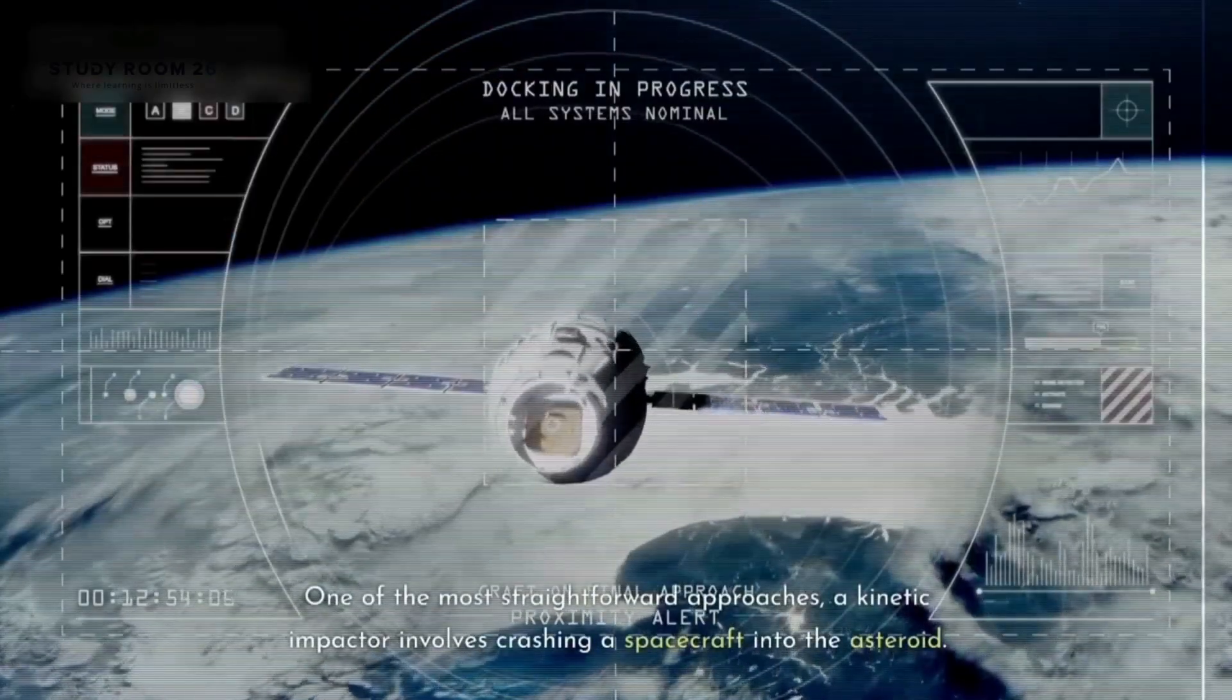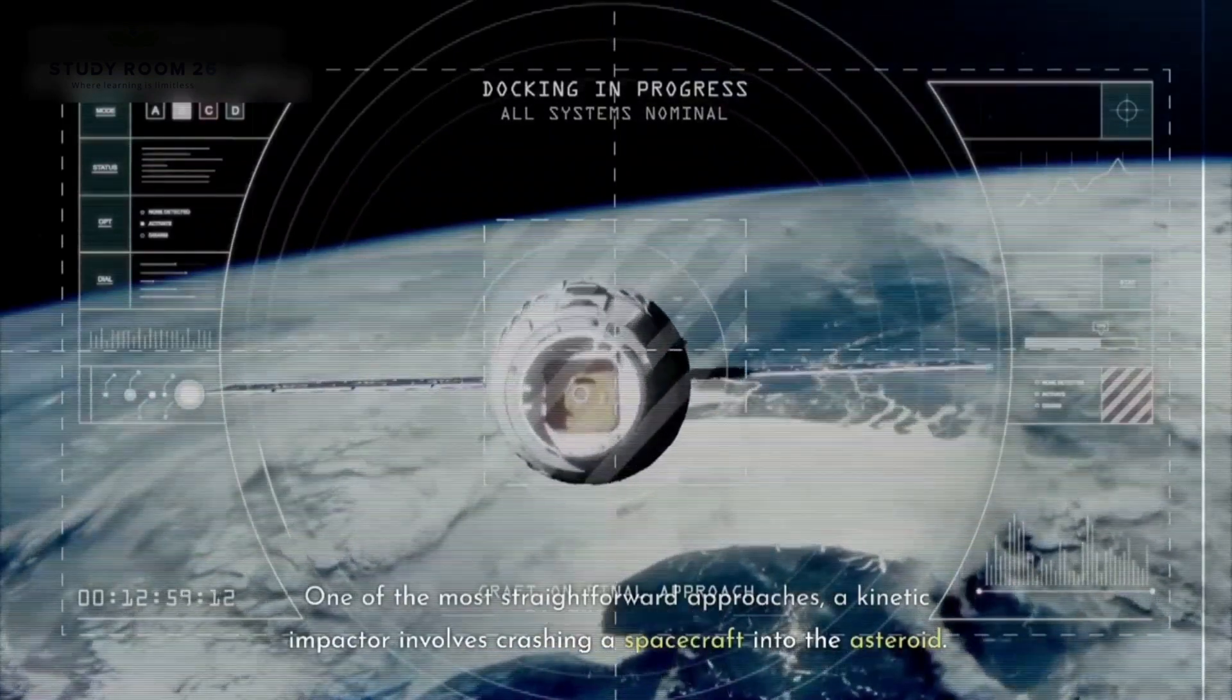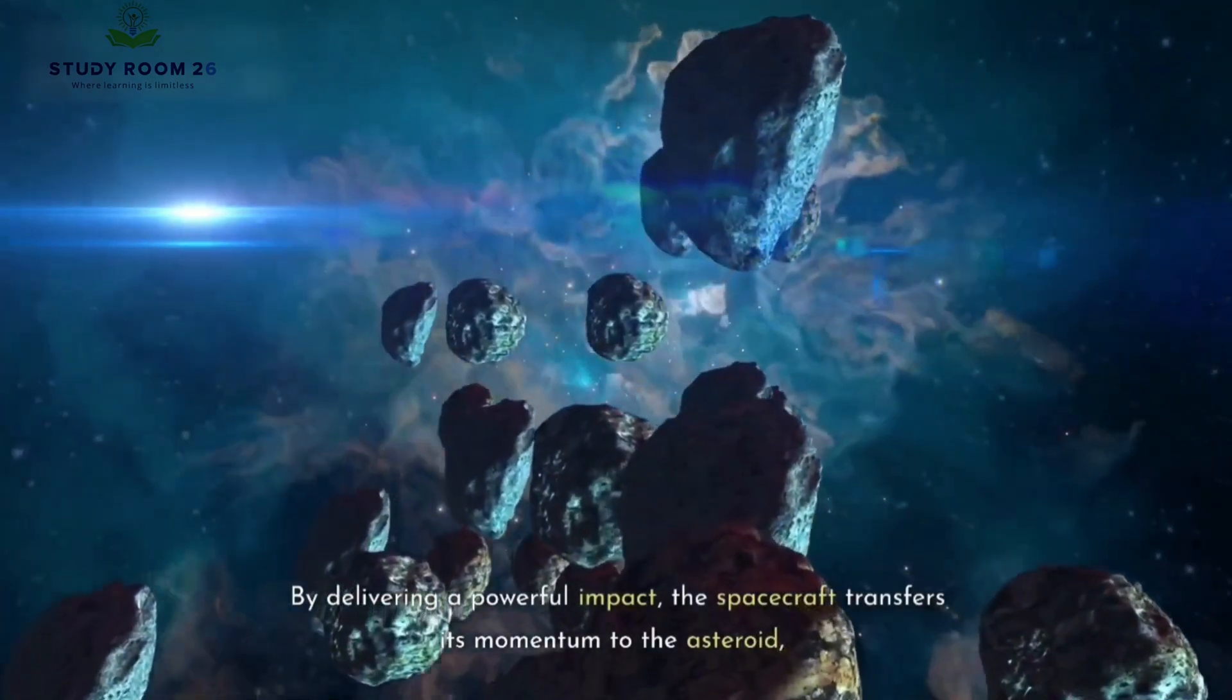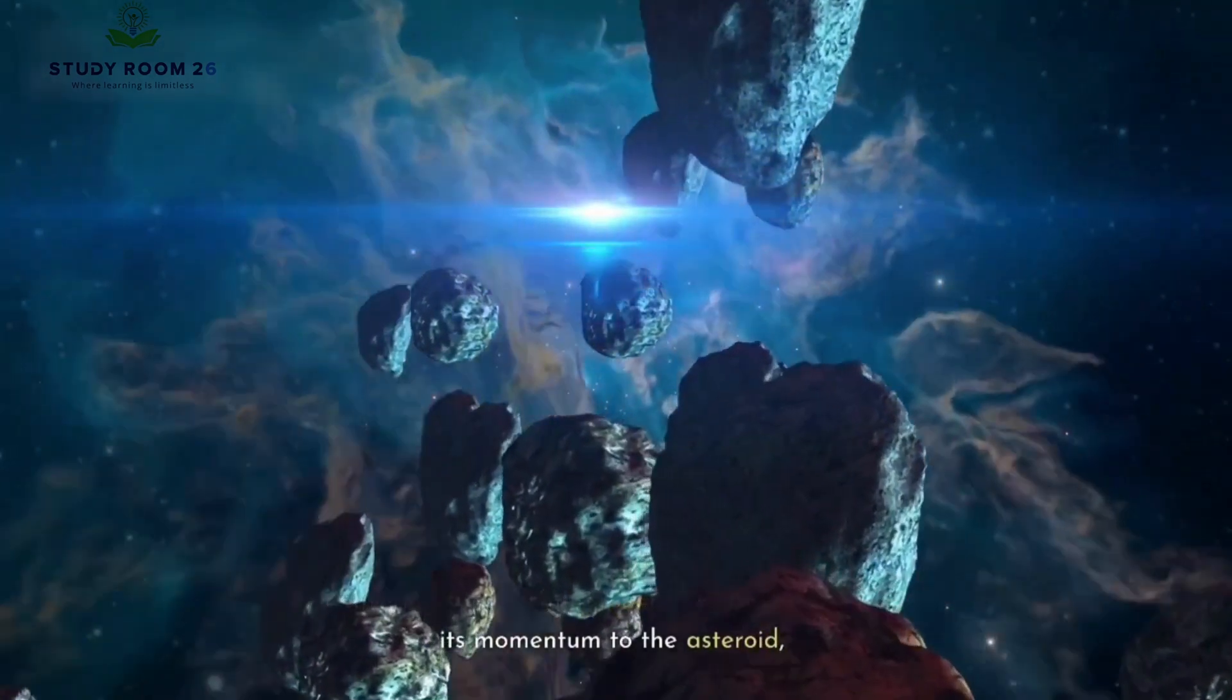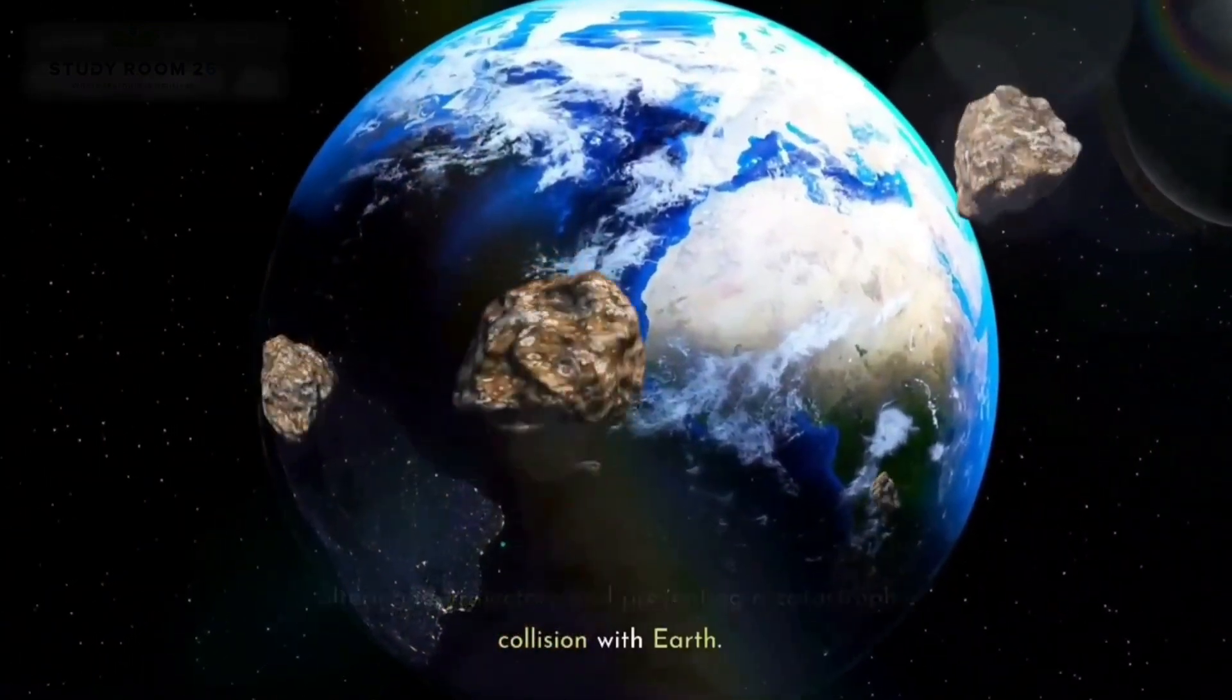One of the most straightforward approaches, a kinetic impactor involves crashing a spacecraft into the asteroid. By delivering a powerful impact, the spacecraft transfers its momentum to the asteroid, altering its trajectory and preventing a catastrophic collision with Earth.